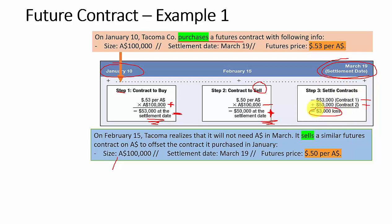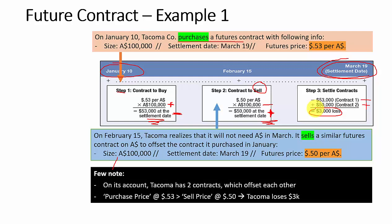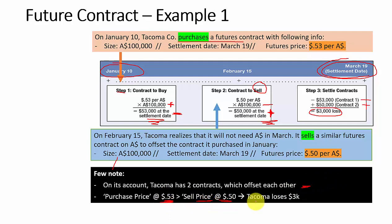In summary, Tacoma has two contracts that offset each other. Because the purchase price of 53 cents is higher than the sell price of 50 cents, Tacoma loses 3,000 US dollars.